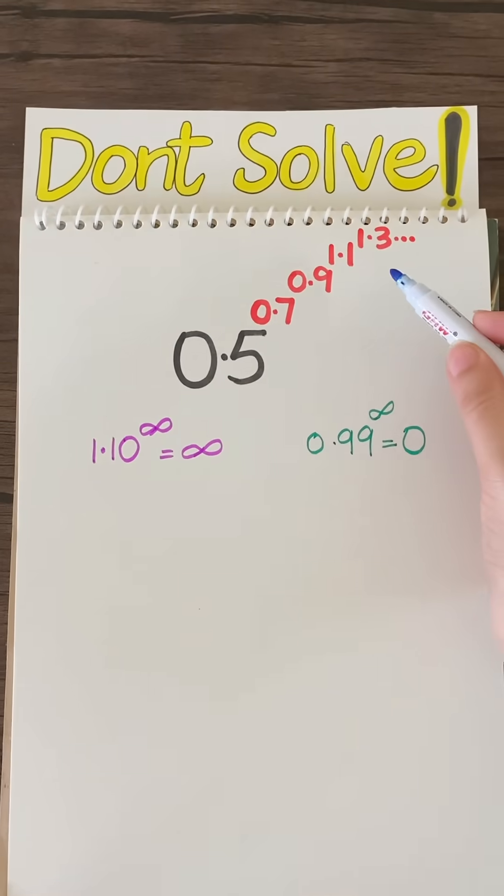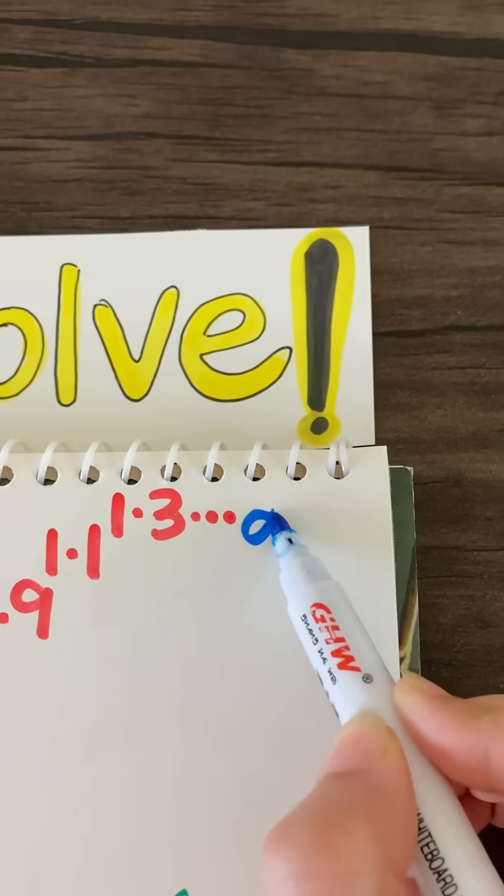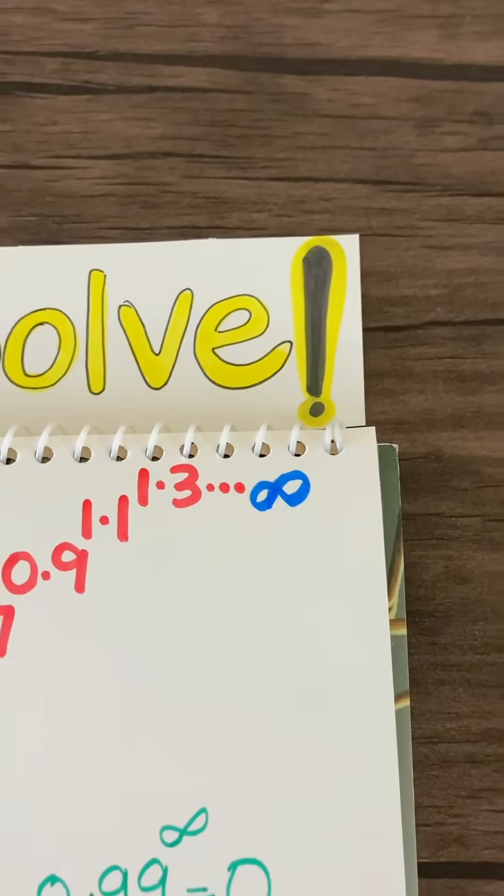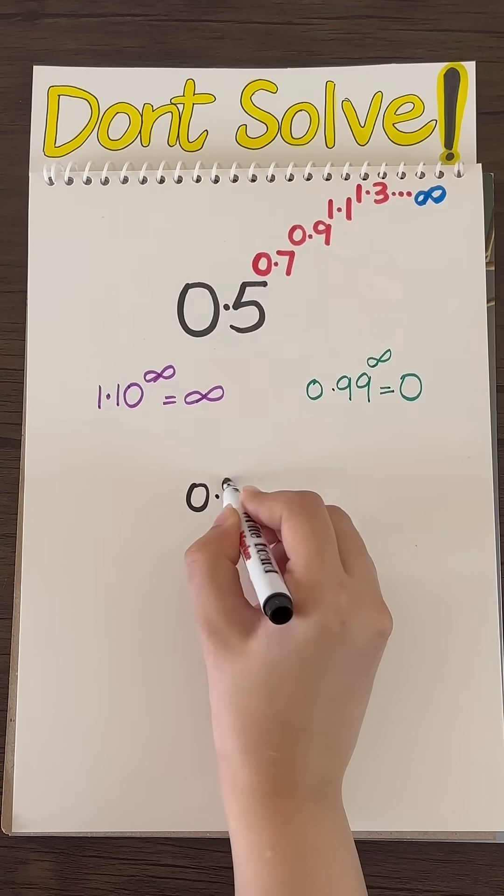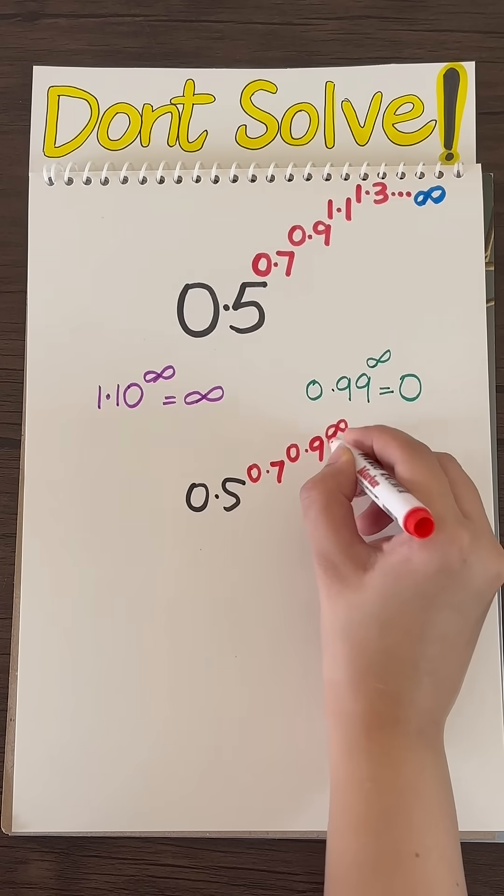So we can apply that up here. All the numbers greater than 1 right here become infinity, right? So now all we have is 0.5 to the 0.7 to the 0.9 to the power of infinity.